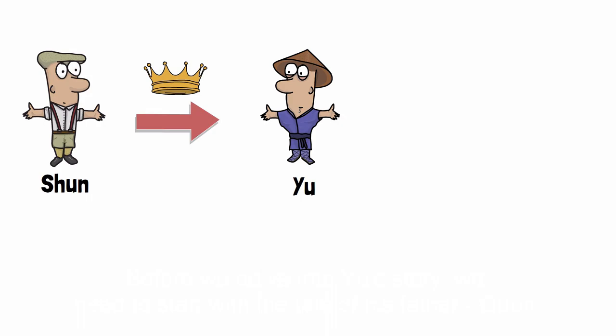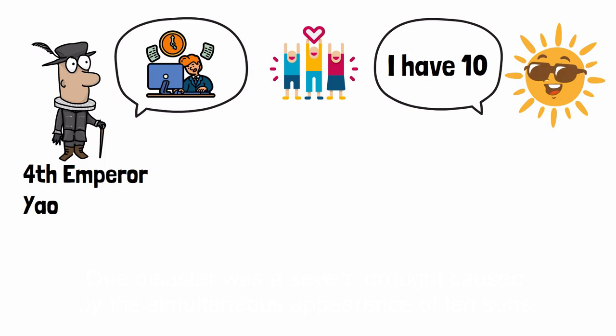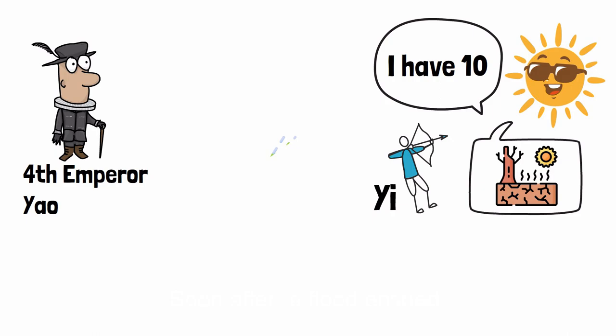Before we delve into Yu's story, we need to start with the tale of his father, Gun. Legend has it that the fourth of the five emperors, Emperor Yao, although diligent in governing the country and kind to the people, experienced numerous adversities during his seventy-year reign. One disaster was a severe drought, caused by the simultaneous appearance of ten suns. The drought was resolved after Yi, the official archer at the time, shot down nine of the suns.